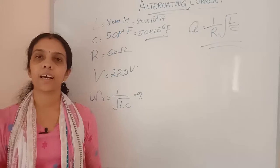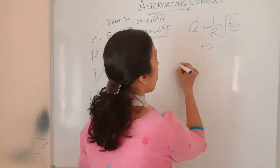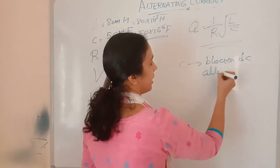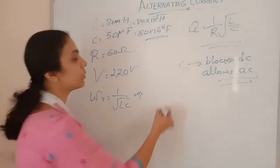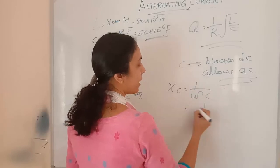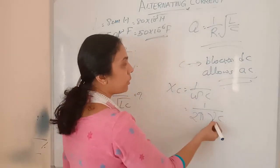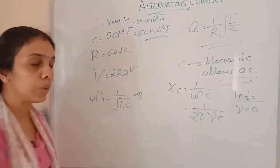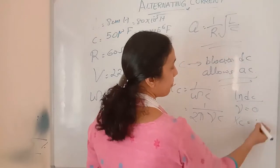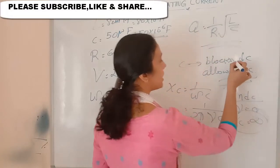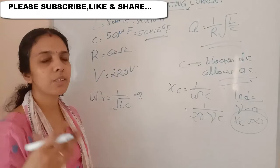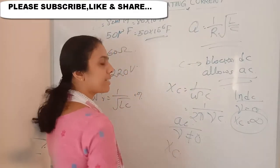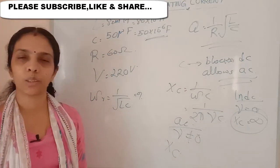Another question: a capacitor blocks DC and allows AC — why? We know XC equals 1/(ωC), and ω equals 2π×ν×C. In a DC source, frequency ν equals zero, so XC equals 1/0, which is infinity. If XC is infinity, no DC current can pass through it. But in the case of AC, frequency is not zero, so XC will be less than infinity and AC current will flow through it. That is the reason.